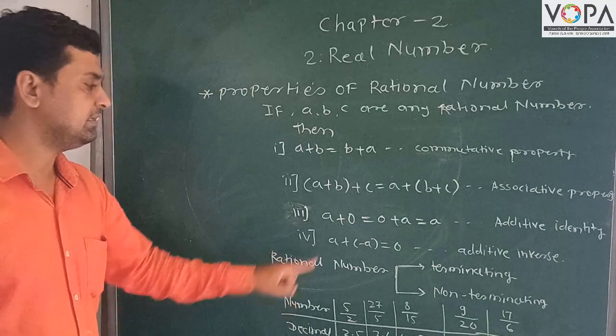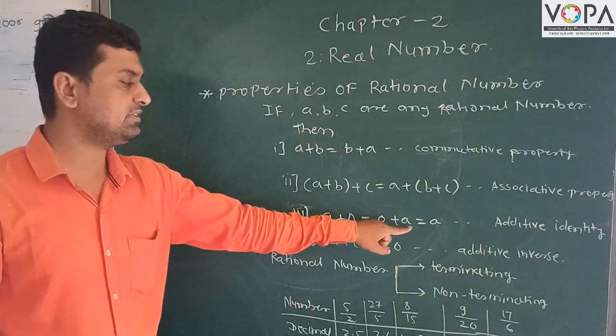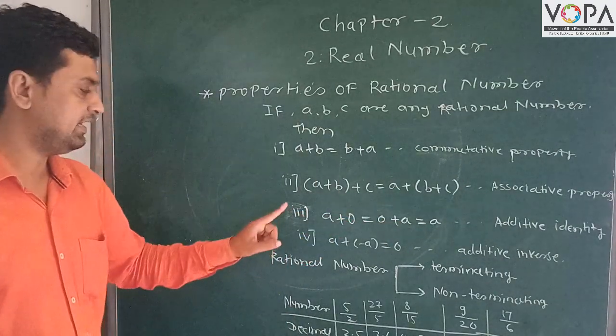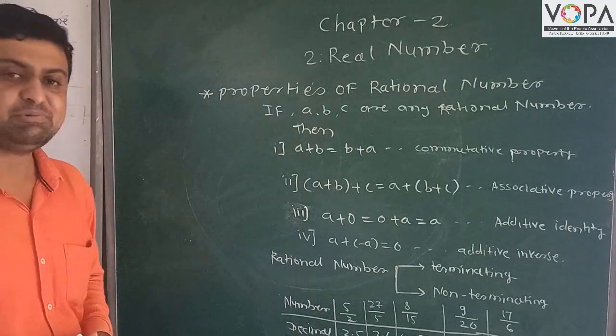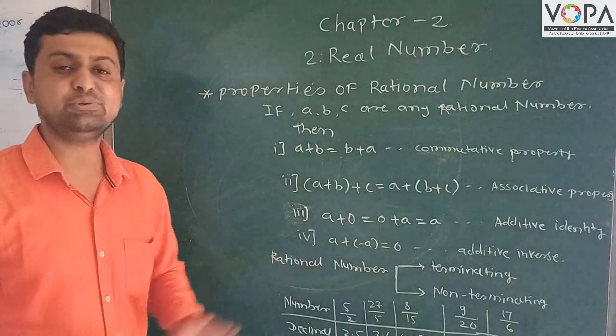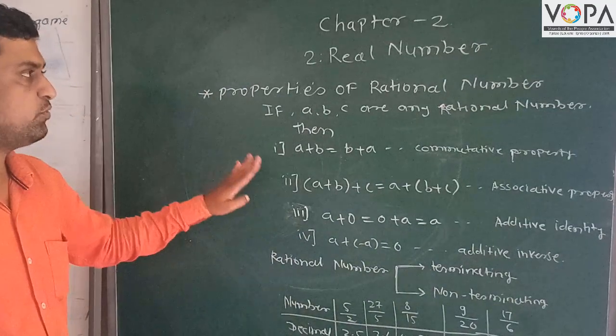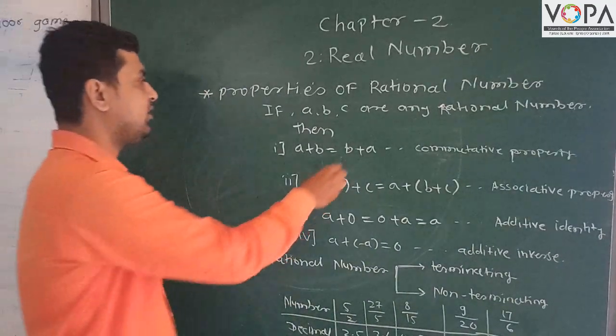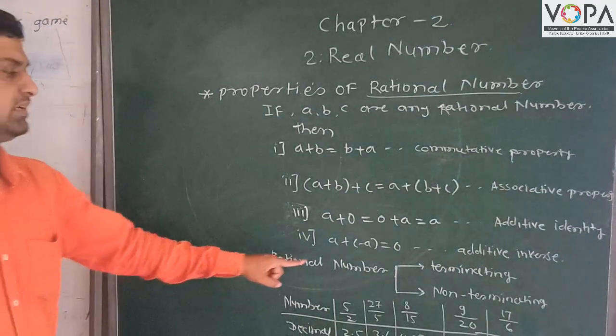Third property is additive identity: a + 0 = 0 + a = a. Fourth is additive inverse: a + (-a) = 0. These are four properties of rational numbers. Then rational numbers are two types: terminating and non-terminating.